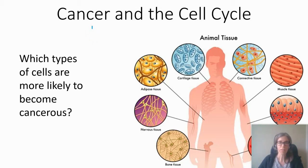Welcome to AP Biology. Today we're going to talk about the cell cycle and its regulation, and when that goes wrong, sometimes cancer happens.